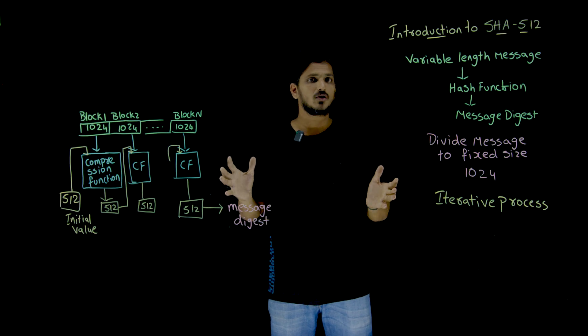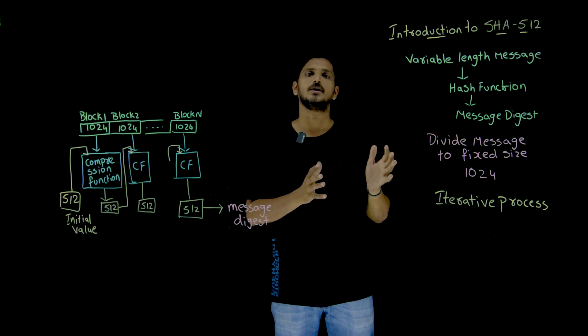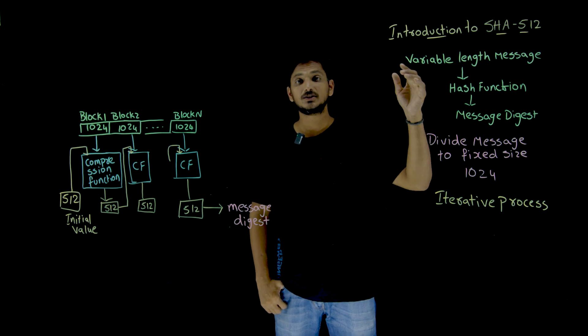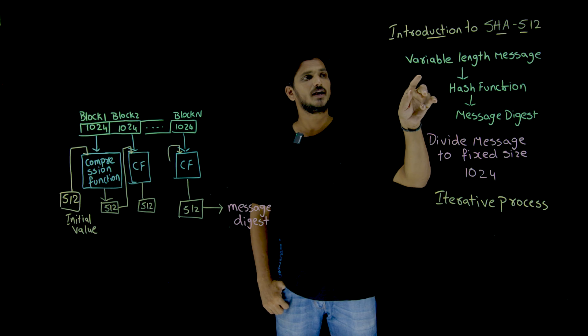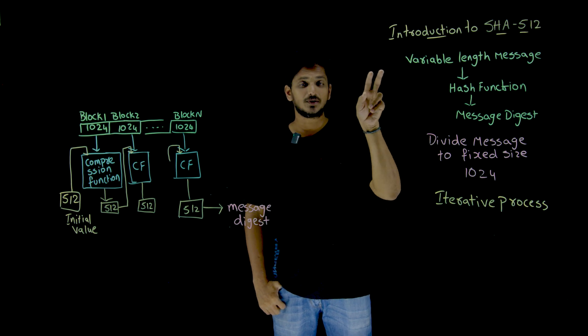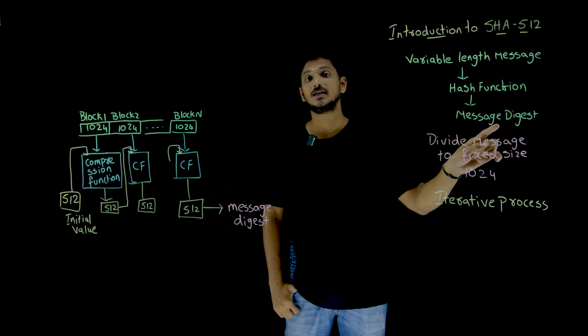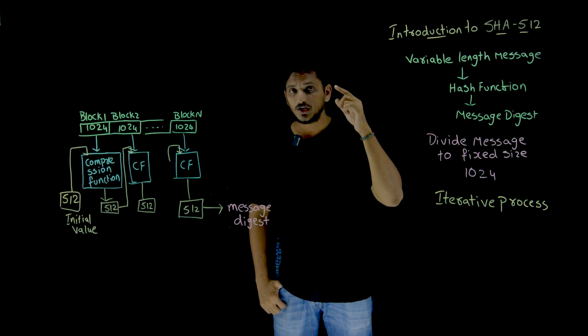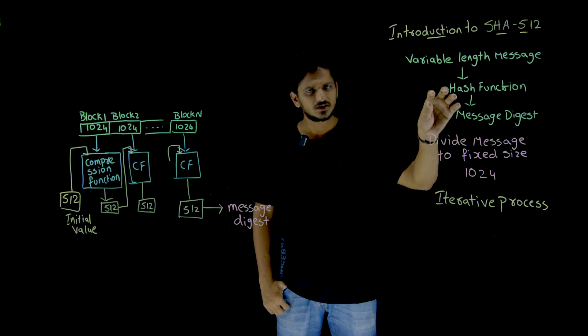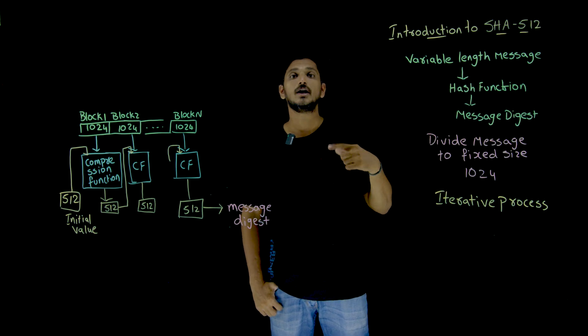So this is a very big concept to understand. Slowly in multiple videos we are going to understand the concept step by step. And the point you need to understand: cryptographic hash function means the message integrity is provided. The message will be of variable length size. For this variable length size message, by considering this complete message, we have to generate a message digest. This is what we need to do. This variable length message should be sent into the hash function and it is going to generate a message digest of 512 bits length.